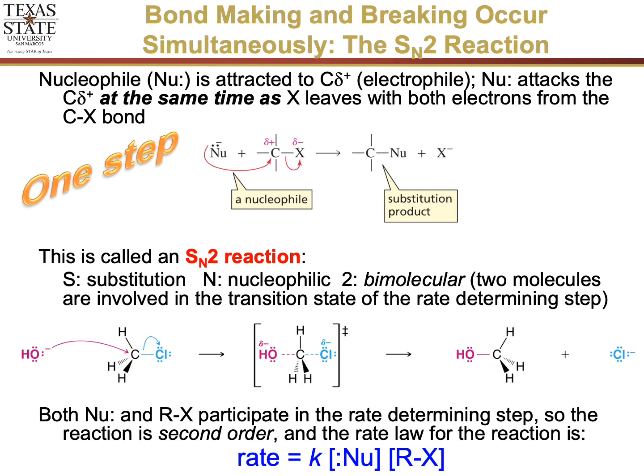As the nucleophile is attracted to that partially positive carbon because we have a polarized bond between the carbon and the leaving group, that nucleophile can come in and be attracted to it and then allow it for the substitution product to happen. When we do this at the same time in one step, we call this the SN2 reaction, because it's a substitution reaction involving a nucleophile, but it's bimolecular, meaning the two molecules are involved in the transition state at the same time.